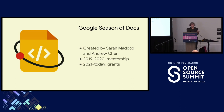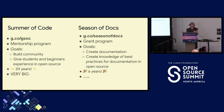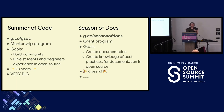Over time, the two programs have diverged in format and in intent. Summer of Code is a mentorship program — its goals are to build community in open source and to give students, and now beginners, experience in open source. It's been going for 20 years and is a very big program. Season of Docs is a grant program. We give funding directly to open source projects. The goals are to create documentation, but especially to create knowledge of best practices in open source documentation. We've been going for six years, and it's a very small program.